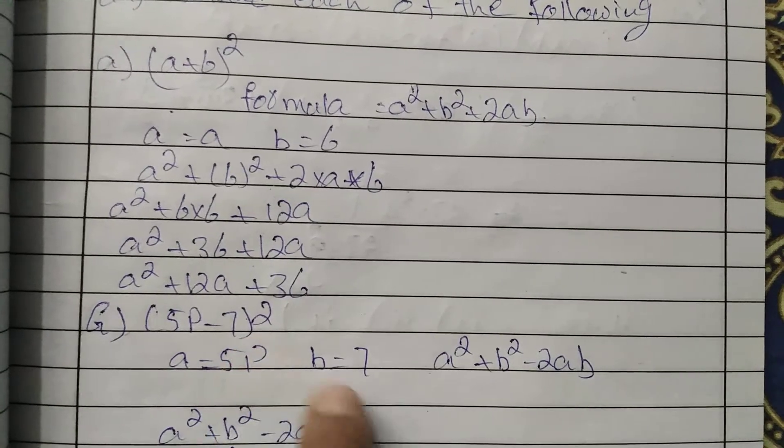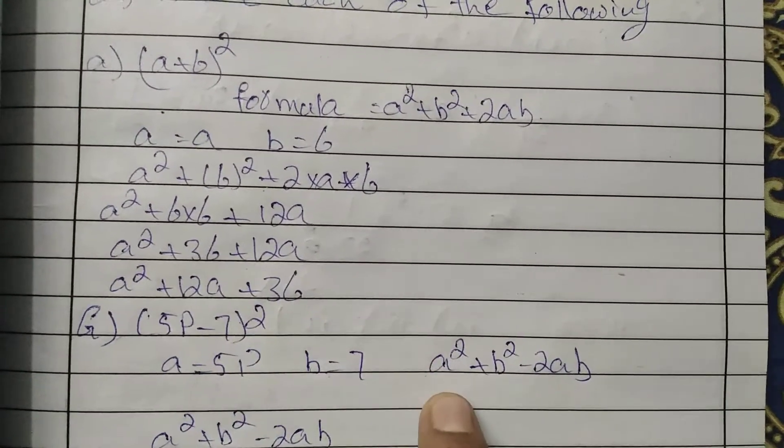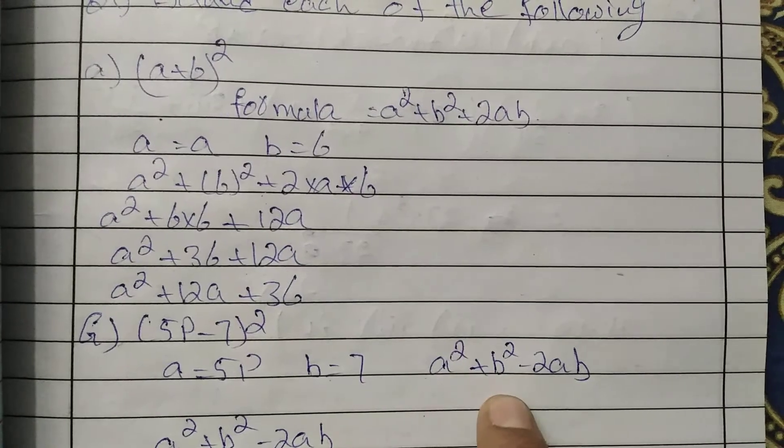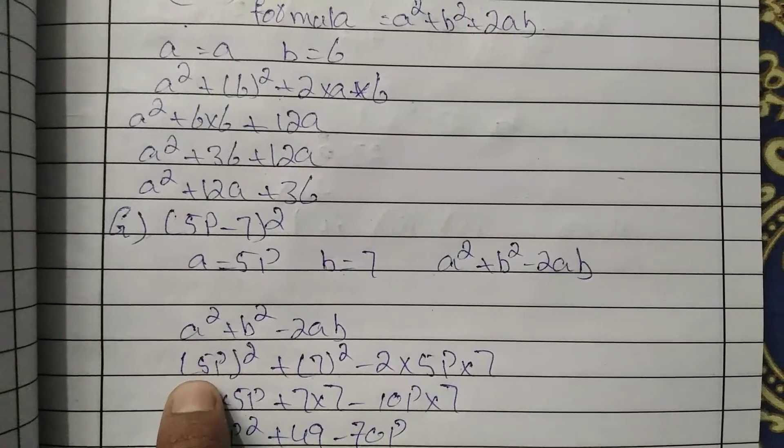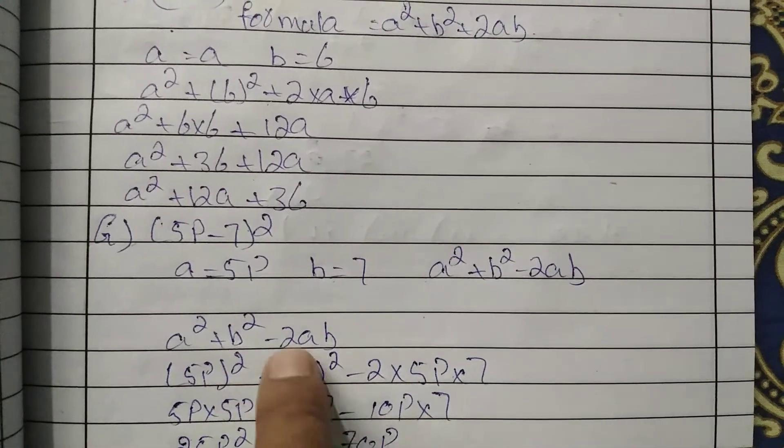a equals 5p, b equals 7. There's a minus sign, so we will use the minus formula: a² + b² - 2ab. Instead of a we put 5p squared, instead of b we put 7 squared, minus 2ab.